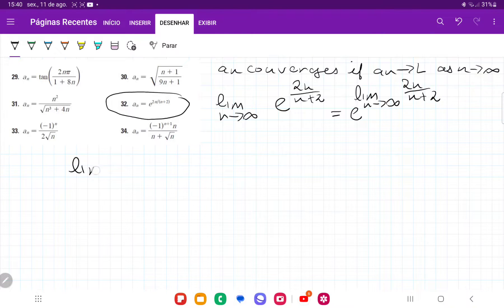The limit as n approaches infinity of 2n over n plus 2, if we just take the limit right now, it's going to be infinity over infinity. That doesn't help us. So what we're going to do here is divide the top and the bottom. We're going to multiply it by 1 over n so that we can at least get a number.